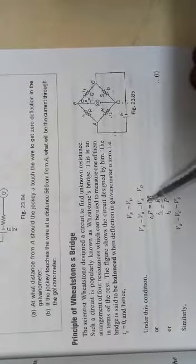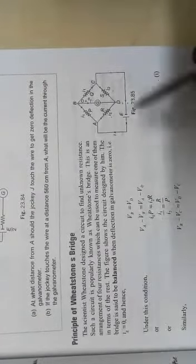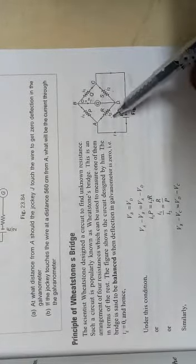From here to here, the potential drop will be equal to the potential drop between VA to VD. This current is I1, this resistance is P, so I1 into P is equal to I2 into R. The potential difference can be obtained by V equals IR. If you arrange this equation, I1 by I2, you get R by P.